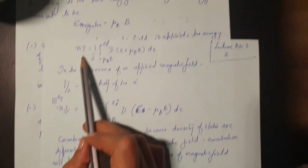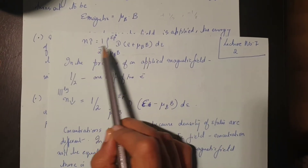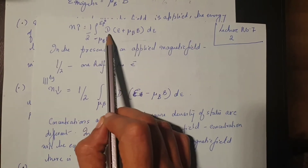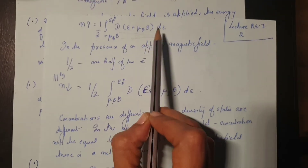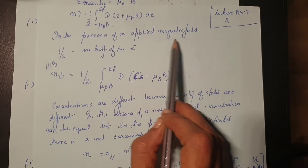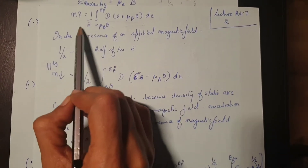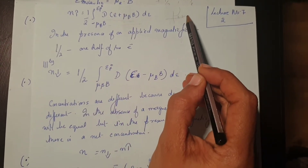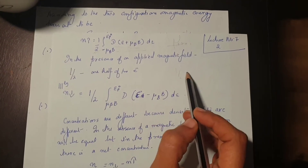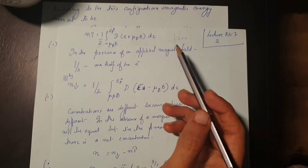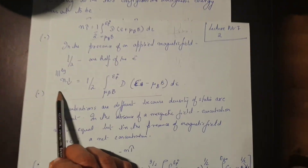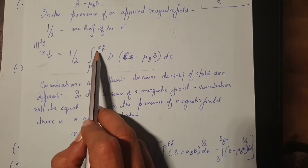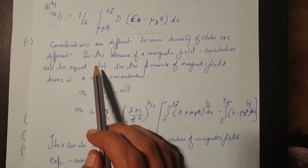The number of spin-up electrons n is written using the density of states, integrating from mu_B times B up to the Fermi energy, with the density of states argument E plus mu_B times B. The factor of one-half appears because only half the electrons have spin up, and the other half have spin down. Similarly, the number of spin-down electrons is written with the lower limit at minus mu_B times B and the density of states argument E minus mu_B times B.